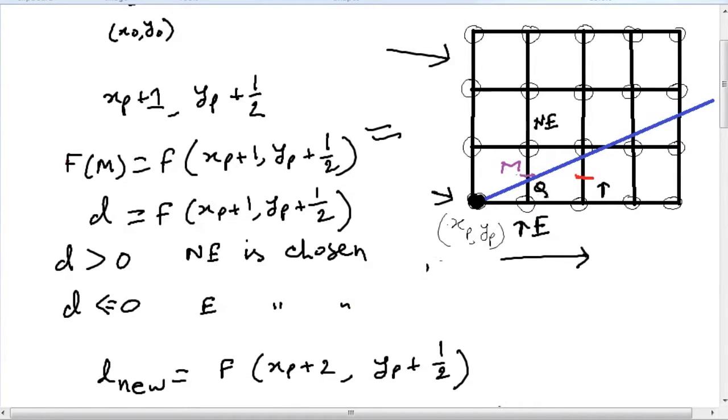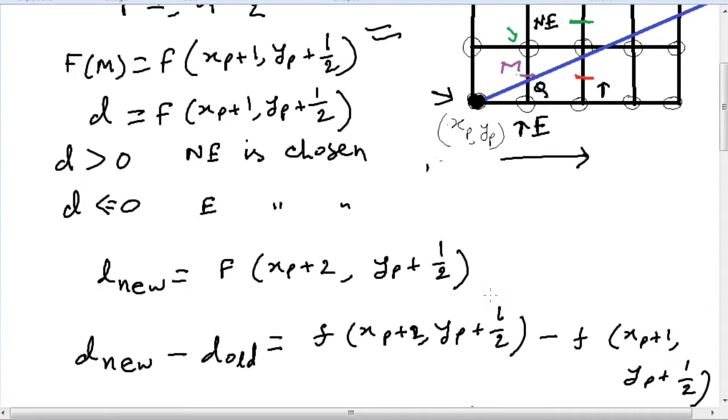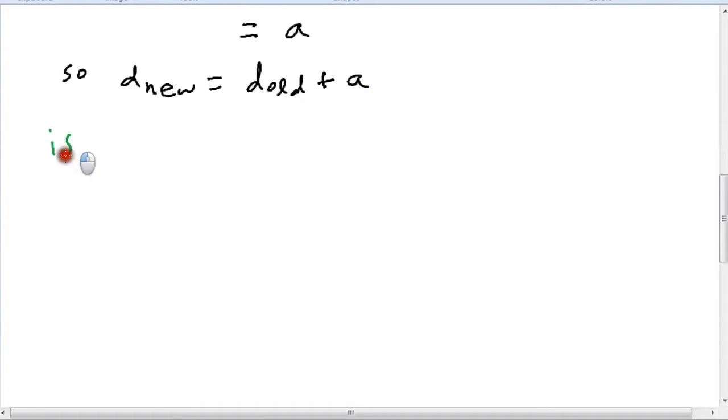Now if the northeast point is chosen, in that case our midpoint is going to be right here. So that's two pixels to the right from xp, yp and about 3/2 pixels upwards. So in that case, if NE is chosen, then our d_new would become f(xp plus 2, yp plus 3/2).